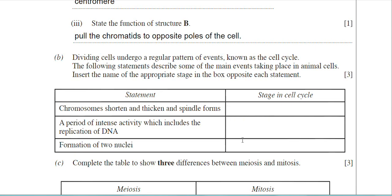Next: a period of intense activity, which includes the replication of DNA. That's going to be interphase. This is the period where a tremendous amount of activity takes place to prepare the cell to undergo mitosis. Replication of DNA is only one of many activities that occur during interphase. Remember, you need to be able to quote at least four, maybe even five, things that occur during interphase.